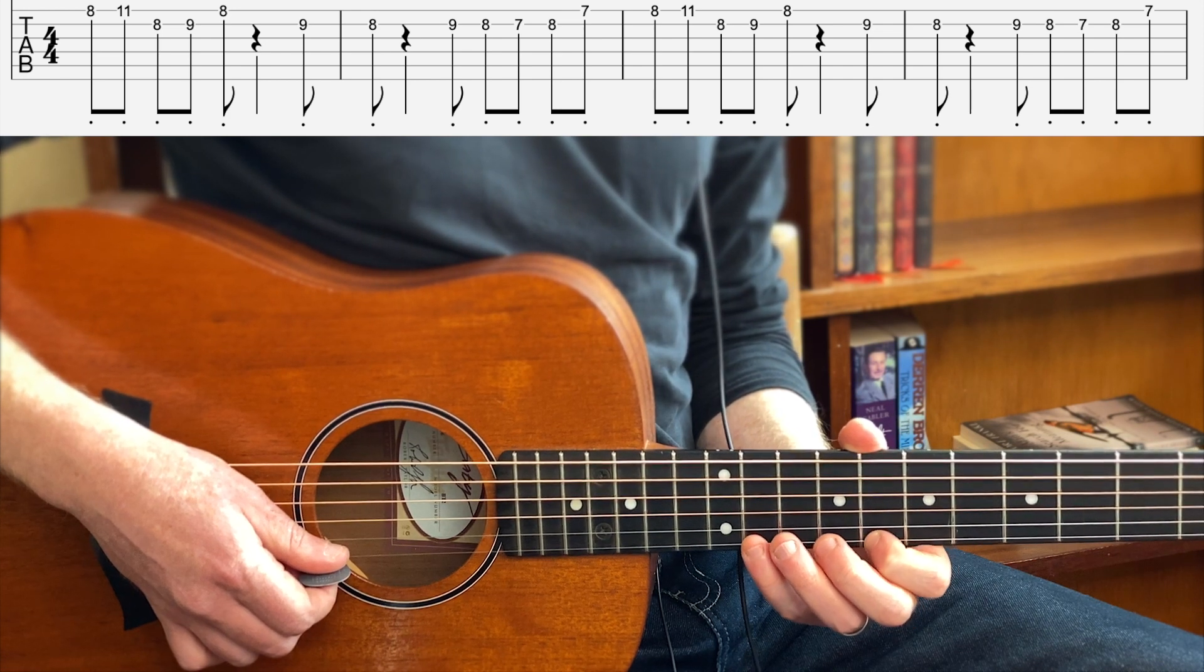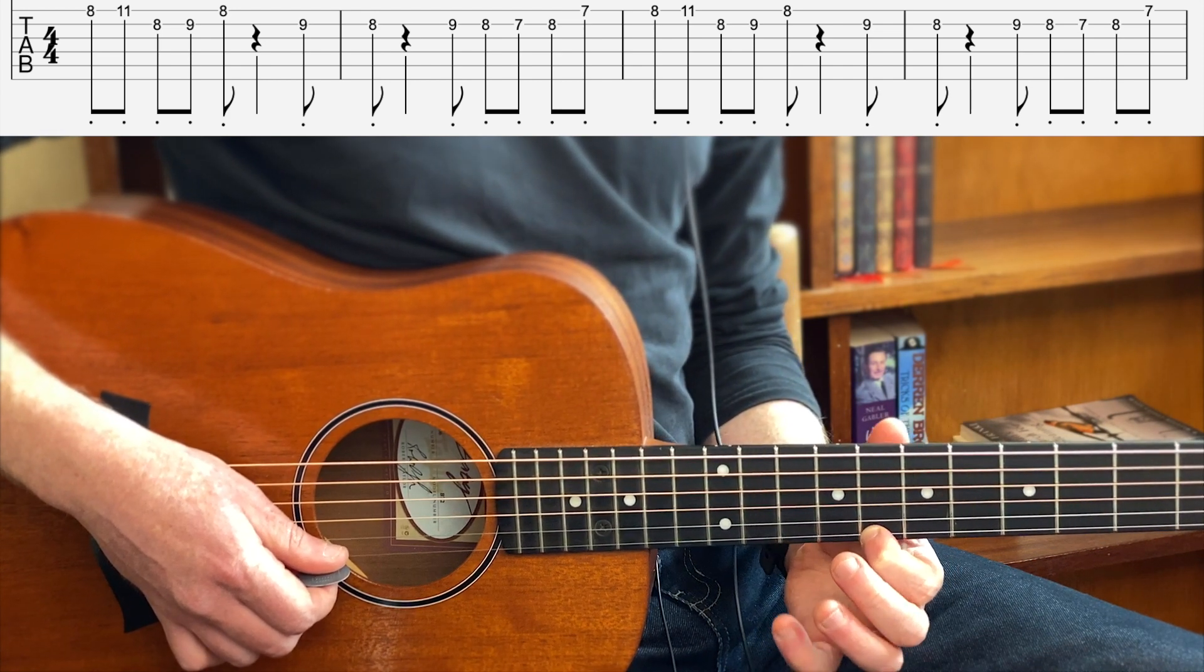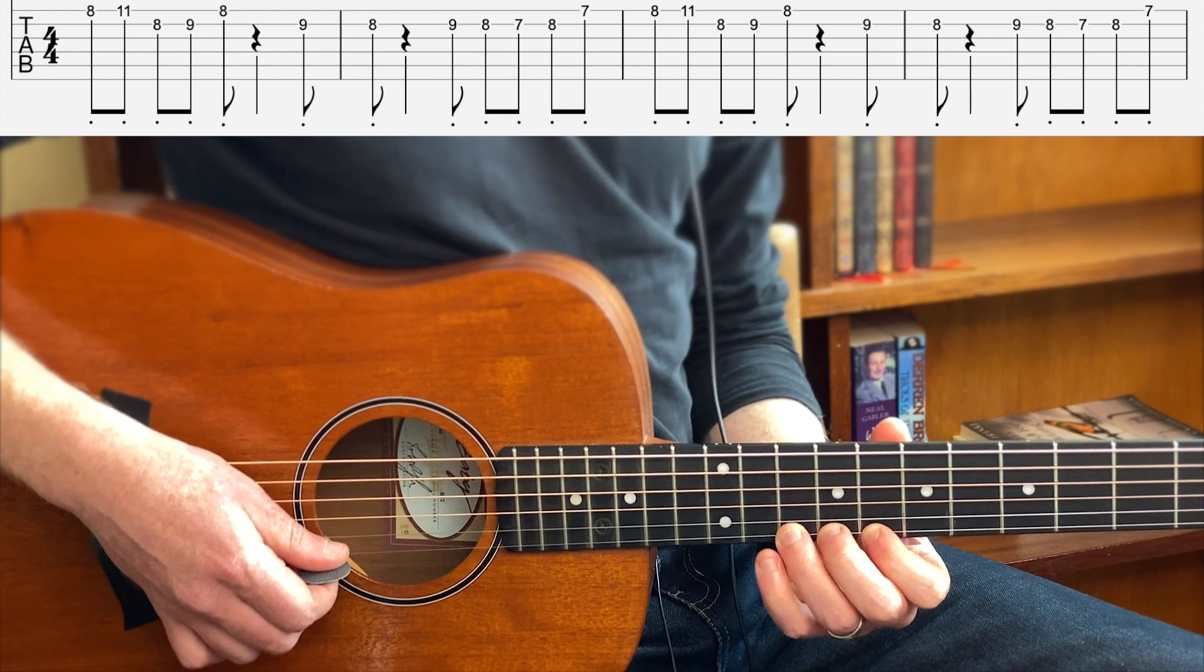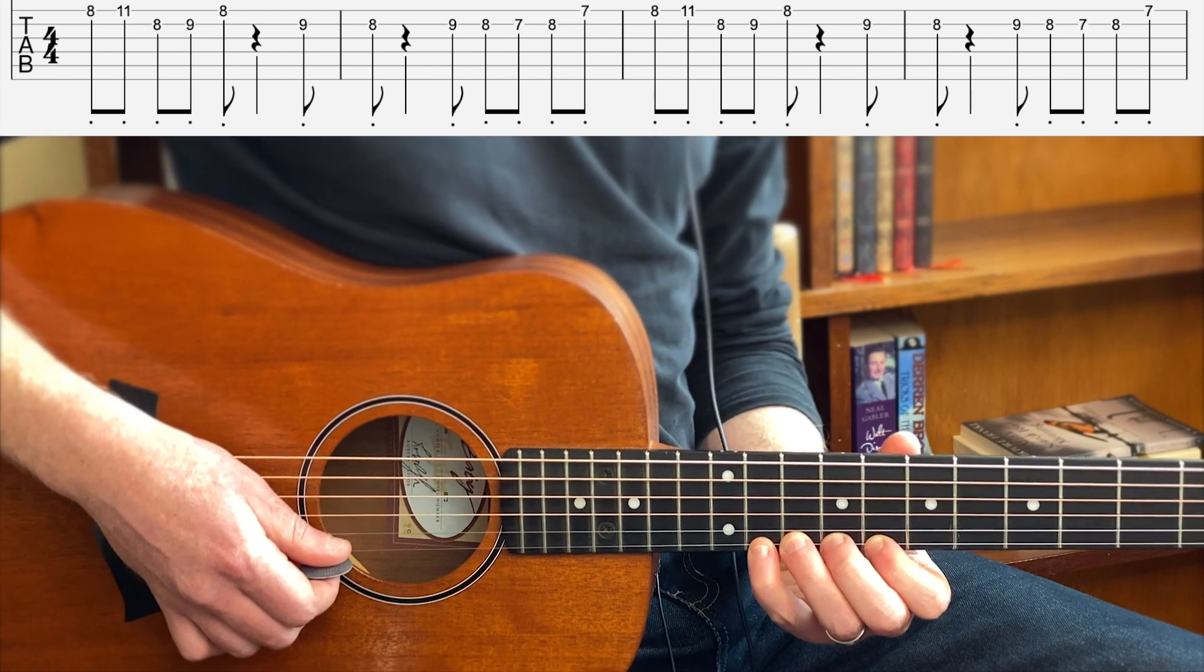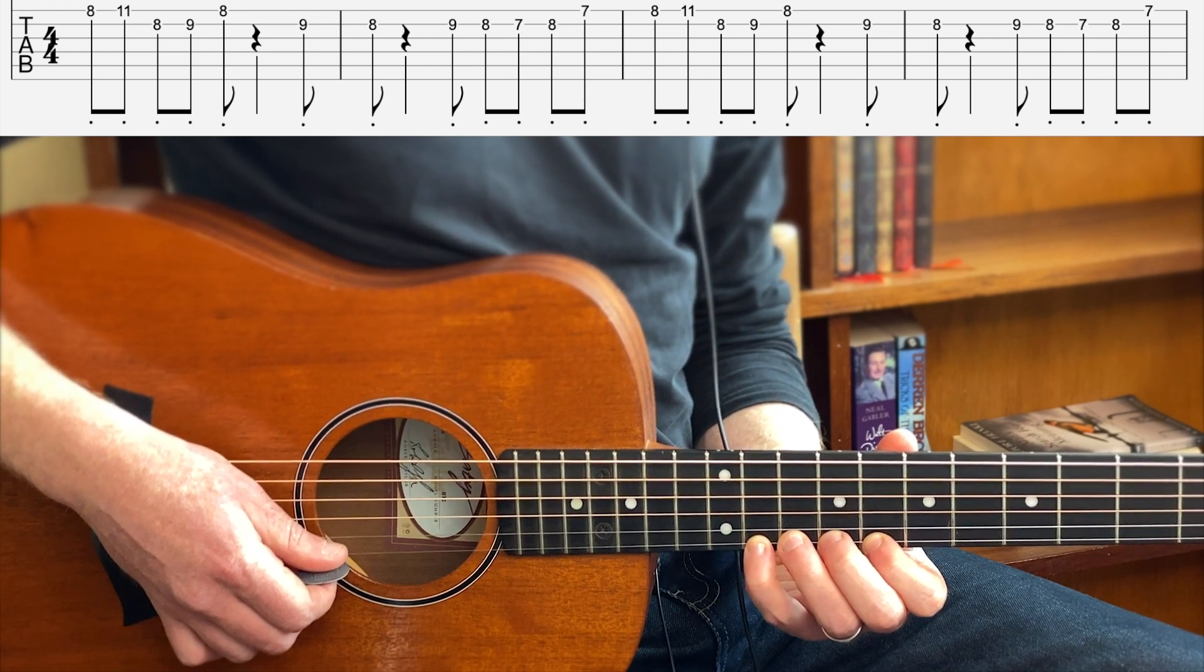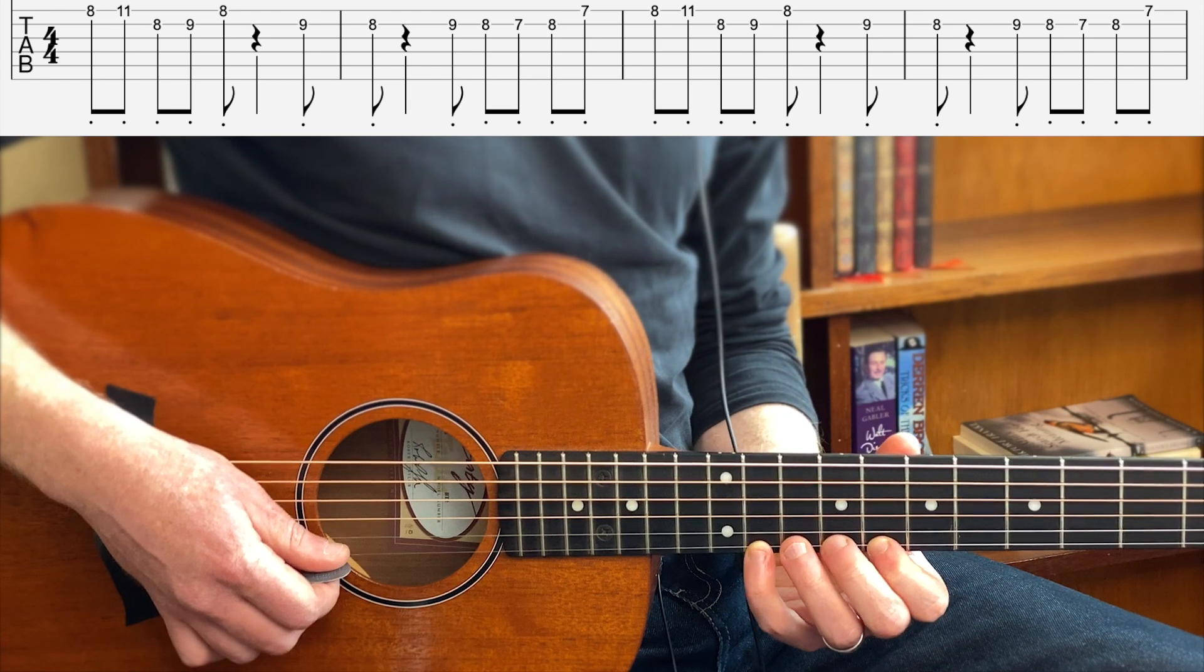That means that any 8th fret you see, my index covers it. Any 9 middle, ring covers the 10th fret, and pinky covers the 11th. So that kind of explains what fingers to use for the tab you see on screen in the beginning.